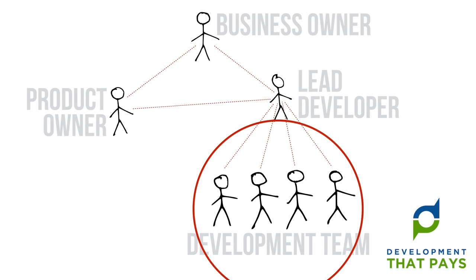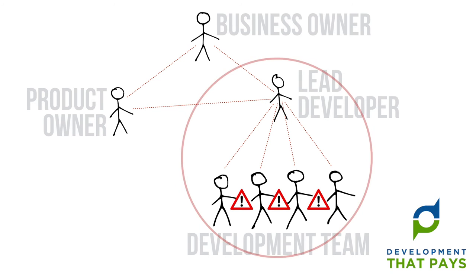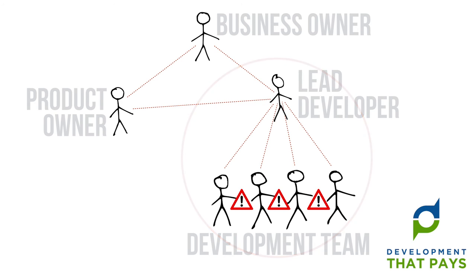How important is it that pairs of people get along? Starting again with the developers: well, it's great if they get along, and it's crucial if they're pair programming. But in general I'm going to say it's of medium importance that they get along well — I'll indicate that with the smallest symbol. Next up, the relationship between the lead developer and the individual developers. For my money, these relationships are a good bit more important, and I'll indicate that with a slightly larger sign.